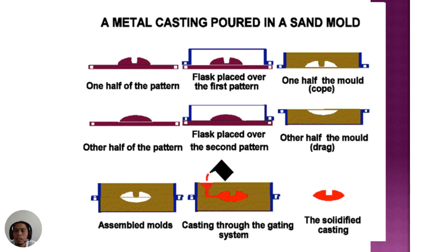In addition, the sand casting process is illustrated in the figure shown. The first and second lines in the figure illustrate the process of making the two halves of the sand mold. The third line shows the assembly process, pouring the molten metal into the cavity, and the solidification process.